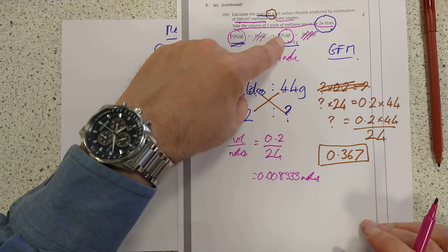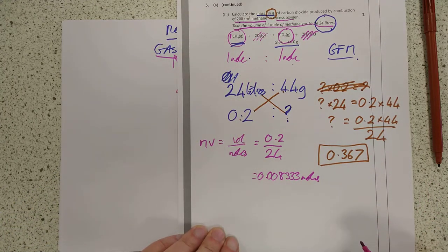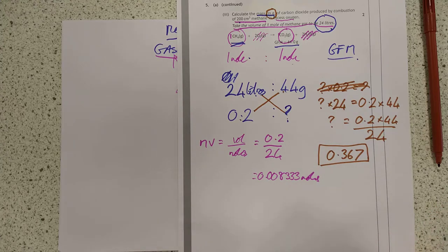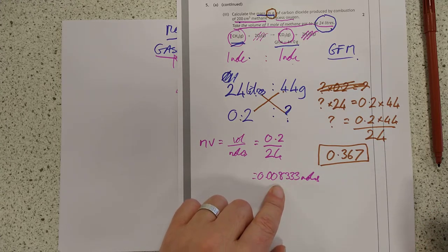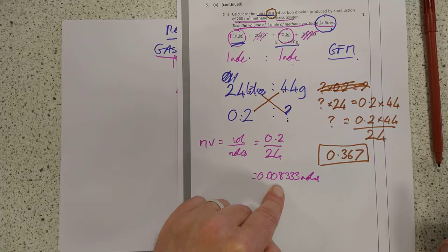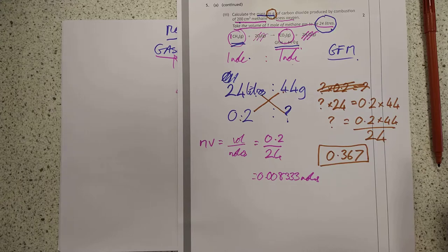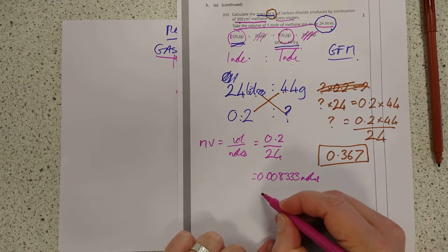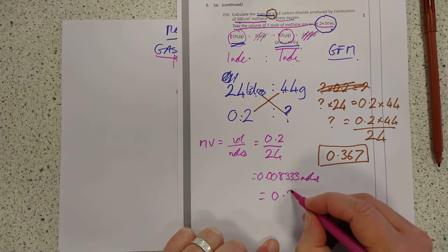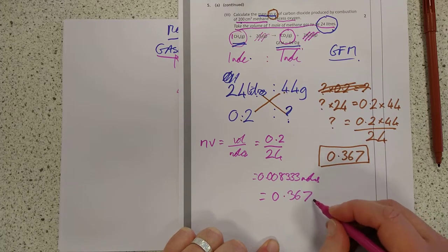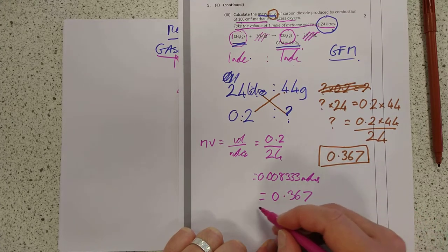Which will also be exactly the same number of moles of CO2. So let's use moles mass and GFM to calculate what that will weigh in grams. So we take that number of moles, multiply it by the GFM, which they have indeed given you, 44. And the answer, not very surprisingly, is exactly the same: 0.367.